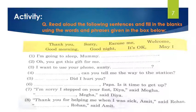The fifth sentence is: 'Dash dash, did I hurt you?' If we hurt anybody, we say 'Sorry.' So: 'Sorry, did I hurt you?' The sixth sentence is: 'Dash dash, papa, is it time to get up?' When waking up in the morning, we say 'Good morning.' So: 'Good morning, papa, is it time to get up?'